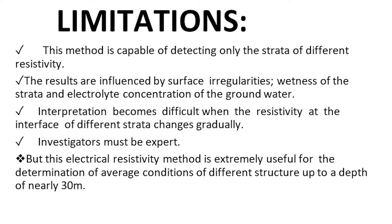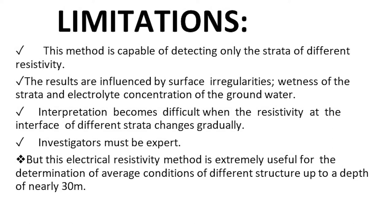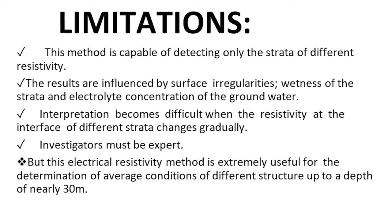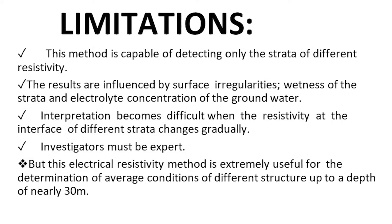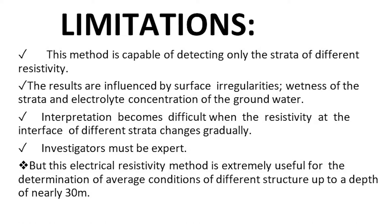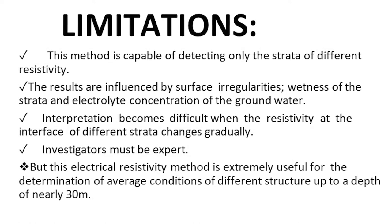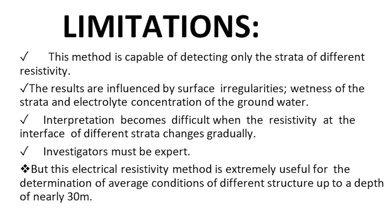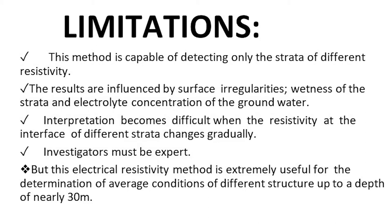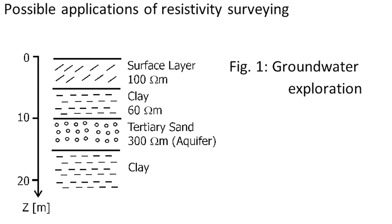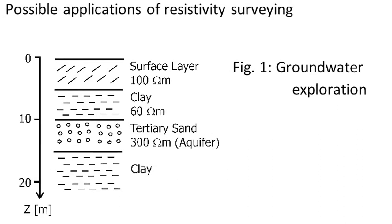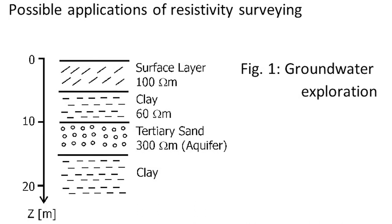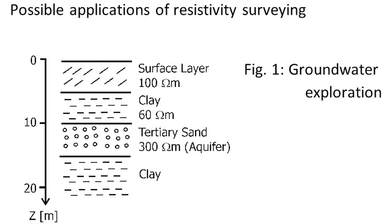Limitations of the resistivity method: it can only detect strata of different resistivity; results are influenced by surface irregularities, wetness of the strata, and electrolyte concentration of groundwater; interpretation becomes difficult when resistivity changes gradually at an interface. However, the method is extremely useful for determining average conditions of different strata up to a depth of nearly 30 meters. Typical values: groundwater 100 ohm-m, clay 60 ohm-m, and territory of sand 300 ohm-m.